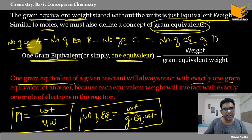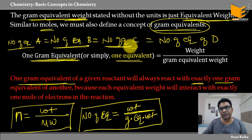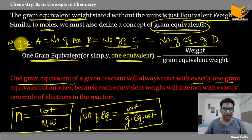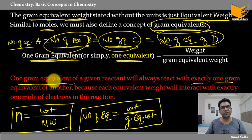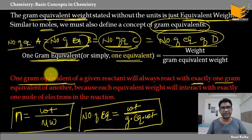अगर A का equivalent 0.25 है, तो B भी 0.25, C भी 0.25, and D भी 0.25। इससे reaction को balance नहीं करना पड़ता। And that is the beauty of equivalent weight — this reaction को balance करने की ज़रूरत नहीं, you can directly jump into it. हालांकि mole concept में, तुमको balance करना ज़रूरी होता है — without balance अगर mole concept में jump करते हो तो गलत हो जाएगा।